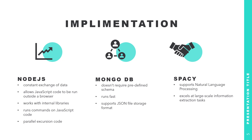MongoDB is an open source platform which has its advantages: it runs fast and doesn't require a predefined schema. At the same time, it supports JavaScript Object Notation file storage format. SpaCy is an open source software library which can support natural language processing tasks and excels at large-scale information extraction tasks.